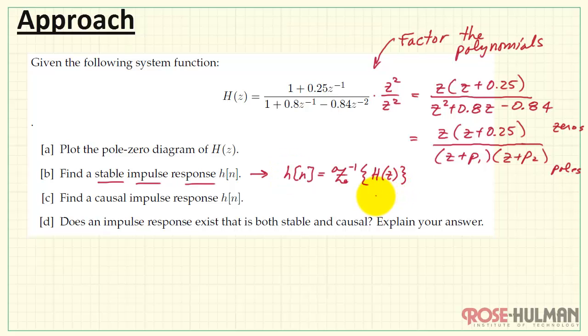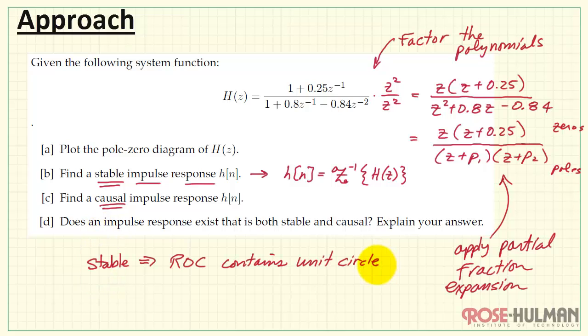But our impulse response is going to be the inverse z-transform of our system function H of z. We'll need to apply the partial fraction expansion to do that. Now, the difference between these two is for stable, we need the region of convergence to contain the unit circle. For causal, we need the region of convergence to be right-sided.